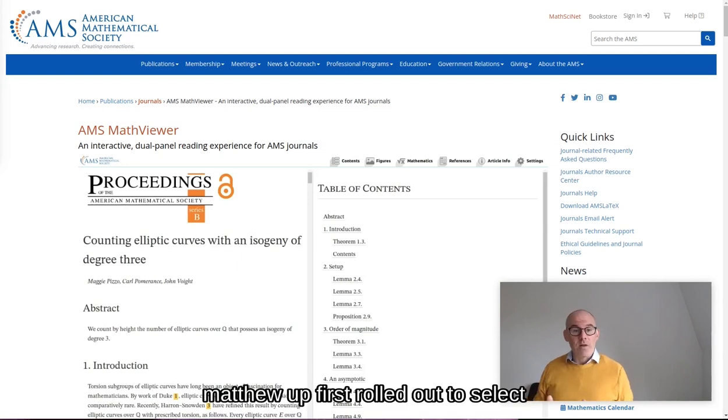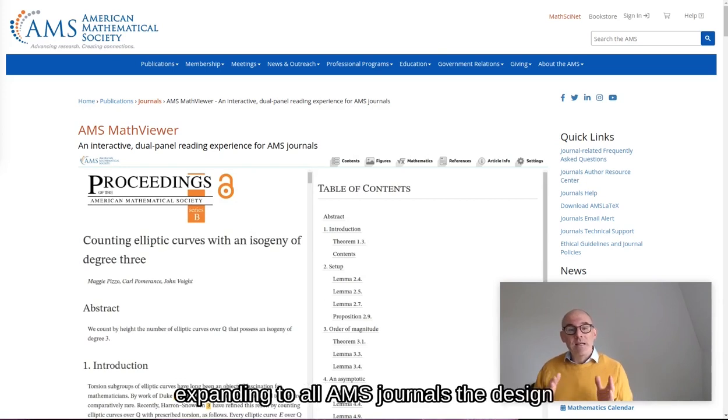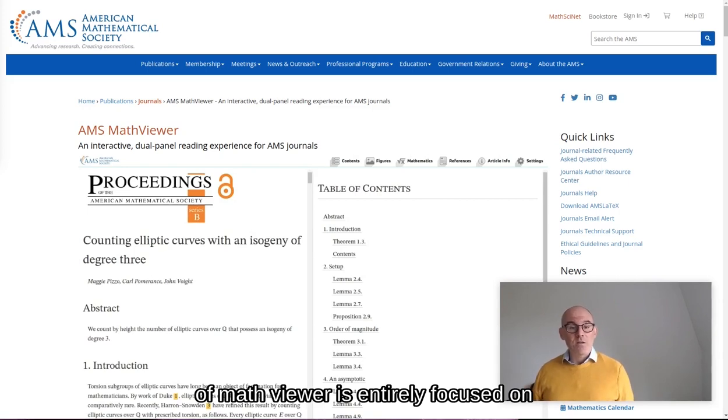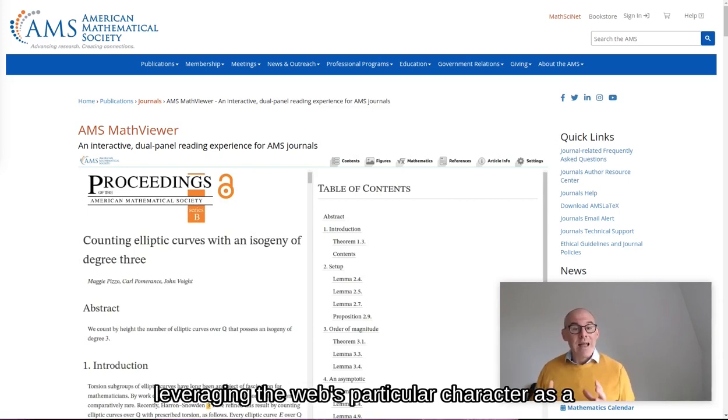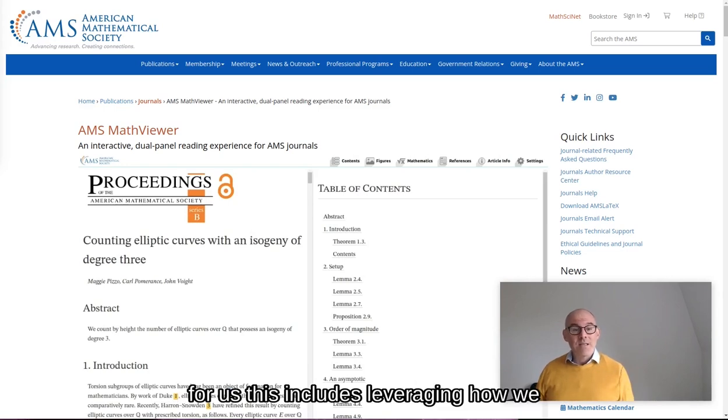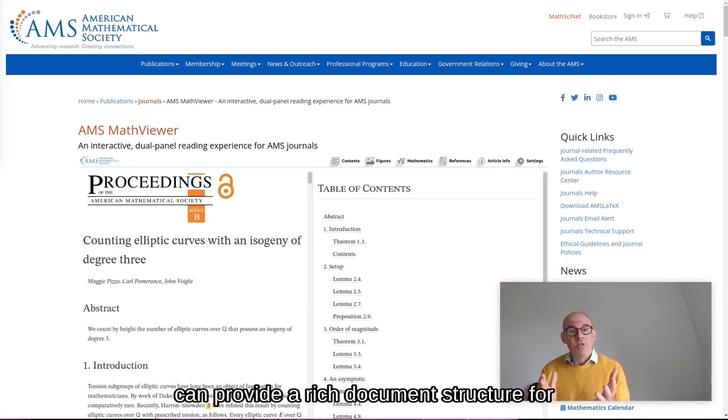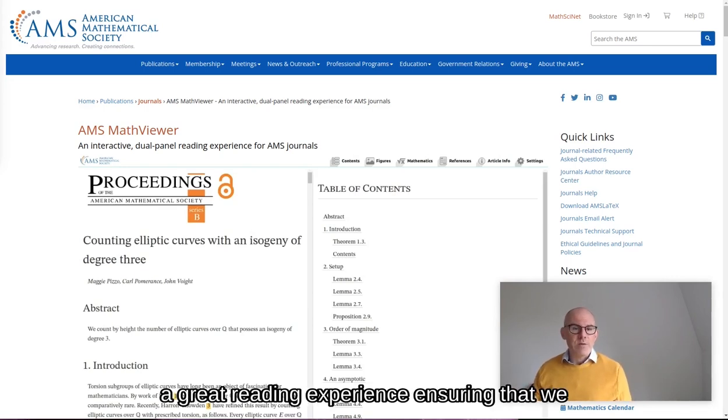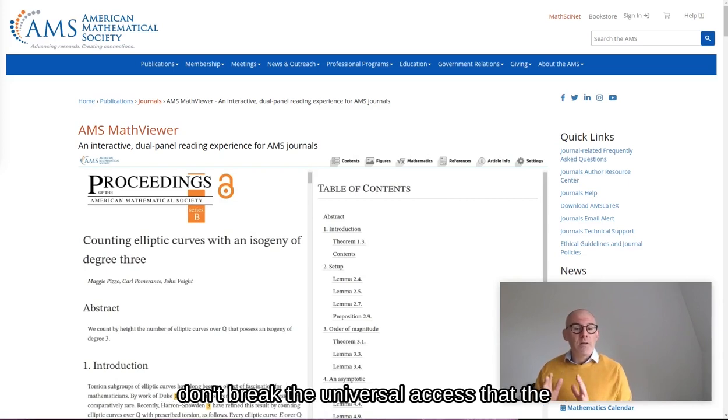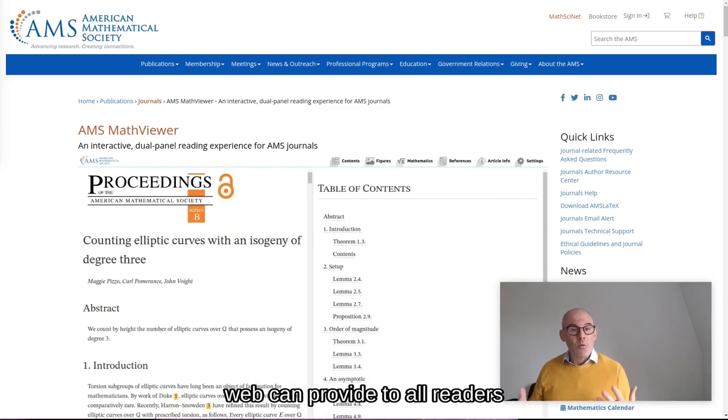MathViewer first rolled out to select journals in 2017 and is steadily expanding to all AMS journals. The design of MathViewer is entirely focused on leveraging the web's particular character as a medium. For us, this includes leveraging how we can provide a rich document structure for a great reading experience, ensuring that we don't break the universal access that the web can provide to all readers. As a result, we work to ensure that we have an adaptable display and that dynamic interaction is possible. But all of it is done for the ease of the reader, to interact with and to process the content we provide.